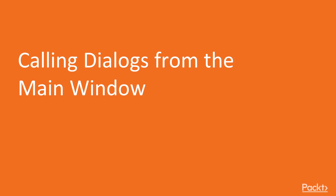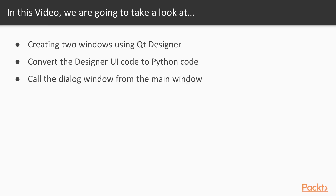In this video we will call dialog windows from our main window. We will create two windows using Qt Designer, then convert the designer-generated UI code to Python code, and afterwards we will call the dialog window from the main window.